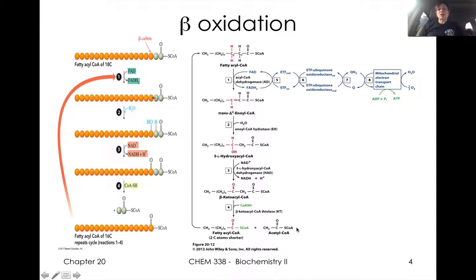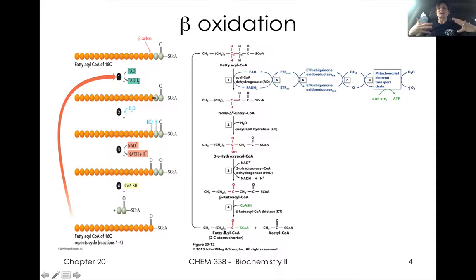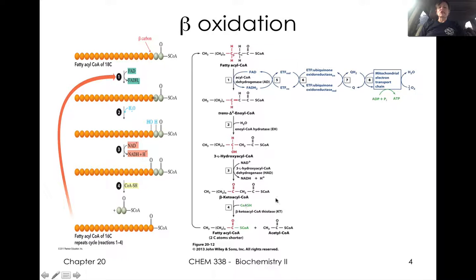Hydration gives us this alcohol. Then oxidation with NADH gives us our beta-keto ester. This beta-keto acyl-CoA thiolase enzyme allows us to do a reverse Claisen condensation. So the mechanism we'll review is a Claisen condensation and then the reverse of it. We'll think about how with beta-keto esters — in this case beta-keto thioesters — the bond between the alpha and the beta carbon is what we call labile, or easily broken.